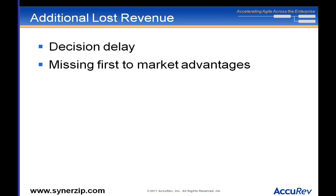You can also assess the time frame of value. One feature might be valuable for years — it's a huge differentiator and nobody else is going to catch up in this area for a long time. Another feature: a competitor is going to be offering that in six months, so the time frame for it being a differentiator is much lower. At the end of the day, that's what your product management group is going to do for you.